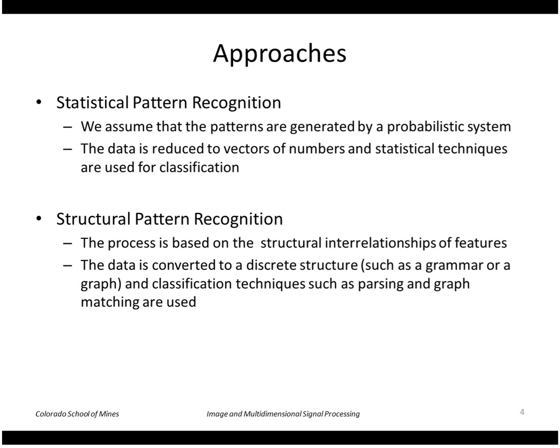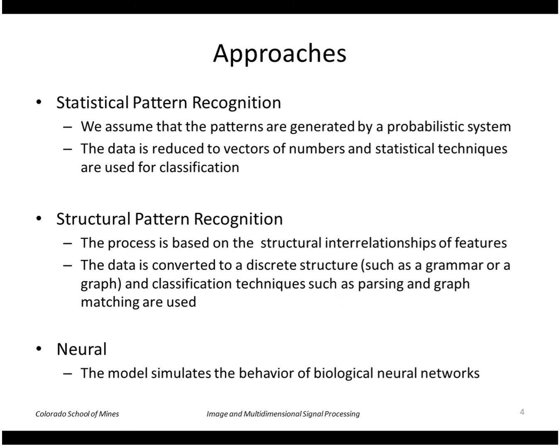Classification on a new instance using the structural approach can be done using methods such as graph matching. Another general approach would be parsing — if we represented our class using a formal grammar, we could use that type of method for matching. The third general approach, which we are not going to cover here, is neural, where we have a neural network that simulates the behavior of a biological neural network.